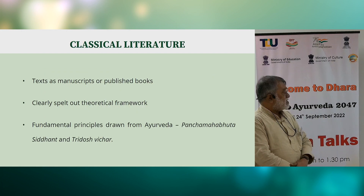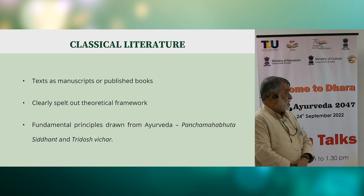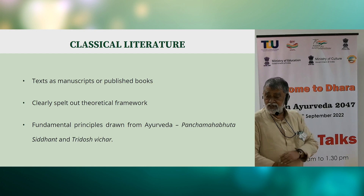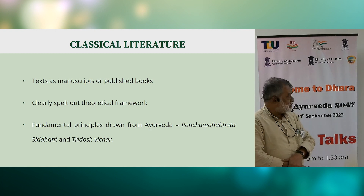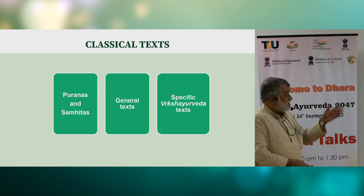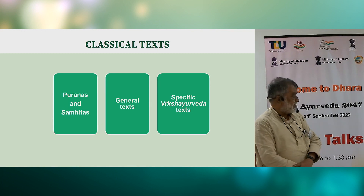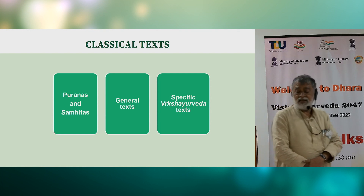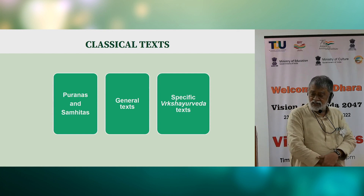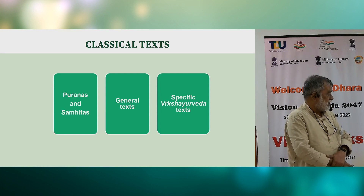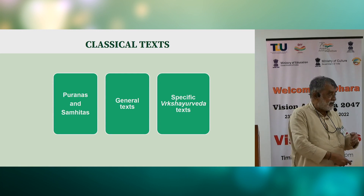The classical literature is in the form of texts — manuscripts or published books — with a clearly spelt out theoretical framework based on Panchamabhut Siddhant and Tridosh Vichar. There are Puranas and Samhitas, like the Agni Purana, which has a chapter on Vrikshayurveda, and general texts like Chanakya's Arthashastra which has sections specifically devoted to Vrikshayurveda.